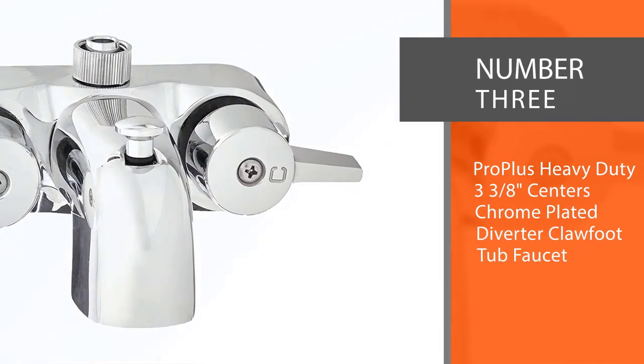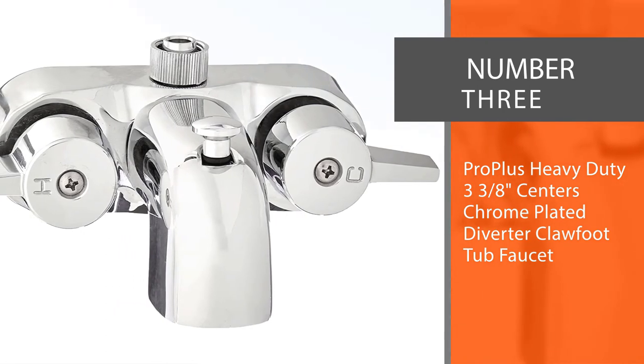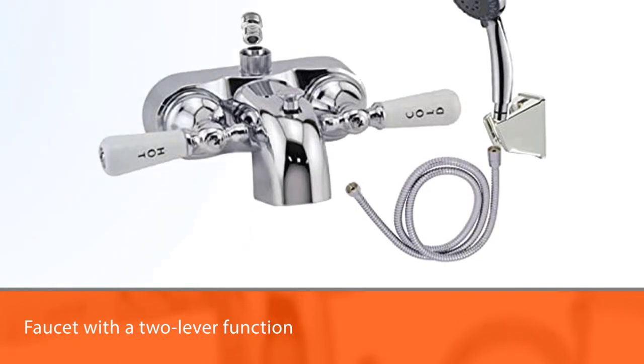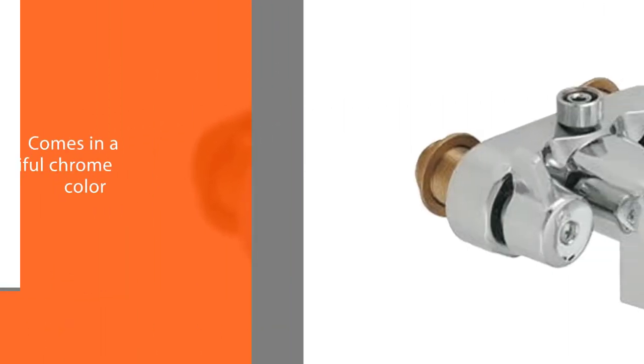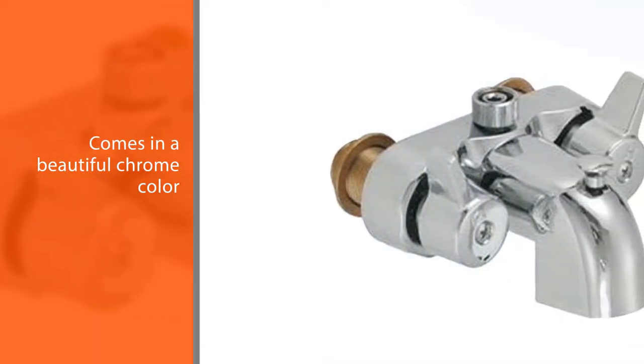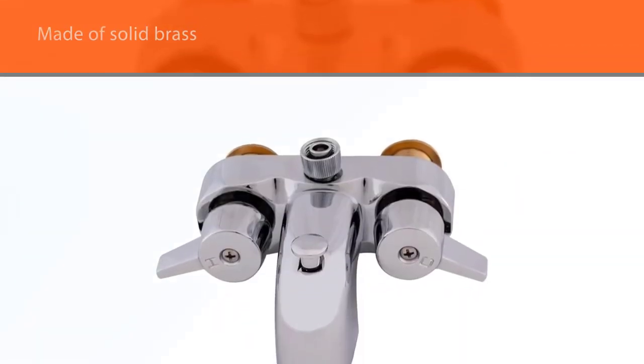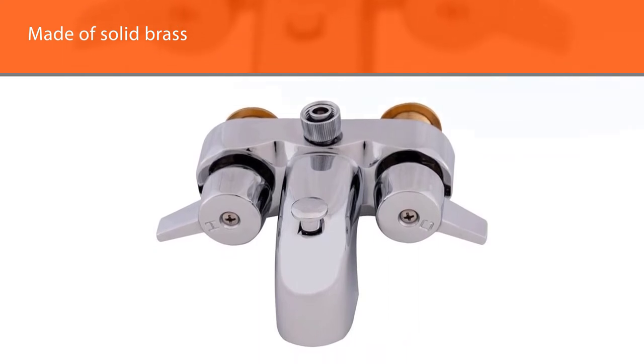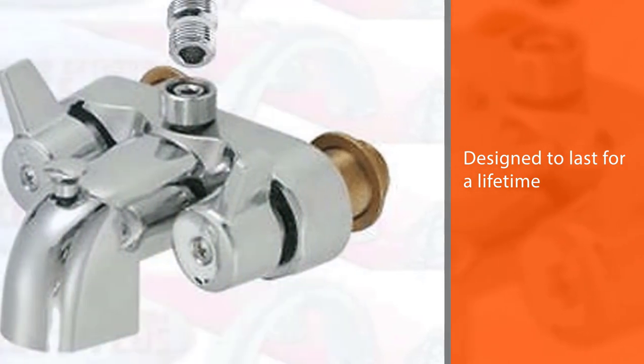Number three: Pro Plus Heavy Duty Three and Three-Eighths Centers Chrome Plated Diverter Clawfoot Tub Faucet. If you want to buy a bathtub faucet with a two-lever function, this model is just what you need. It comes in a beautiful chrome color which you'll appreciate once it's installed in your bathroom. In addition, it is made of solid brass which is designed to last for a lifetime. Interestingly, this model weighs 2.37 pounds with dimensions of 5.8 x 5.8 x 3 inches, which is suitable for any bathtub size.